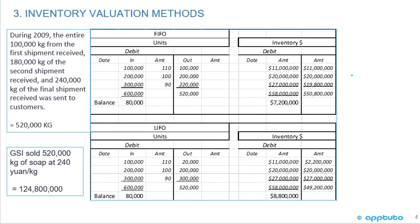Going back to the same example used in the previous LOS, we compare the cost of goods sold and the gross profit under the two methods. In this case, prices were decreasing on our purchases — we started purchasing at 110 per kilogram, then 100 per kilogram, then 90 per kilogram. So our cost of goods sold under the FIFO method was higher than under the LIFO method. If prices were increasing, cost of goods sold under LIFO would be higher than FIFO.